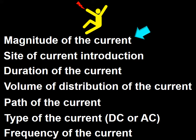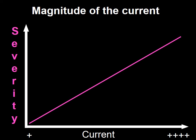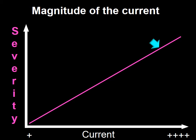Let us start with the magnitude of the current. The relation between the magnitude of the current and the severity of the clinical symptoms is very clear. The higher the magnitude, the more severe are the symptoms. Exposure to a small electrical current produces less severe manifestations. Exposure to a large current produces more severe manifestations.